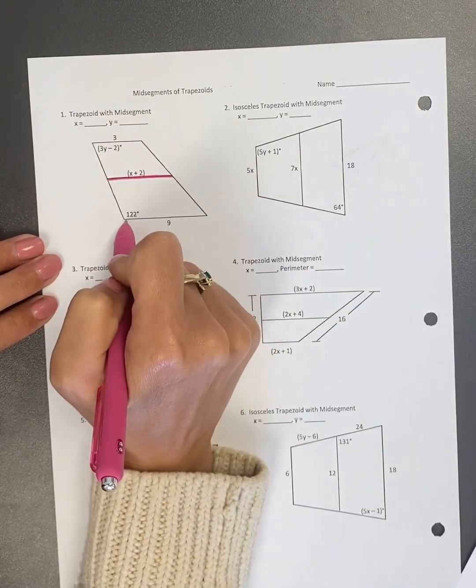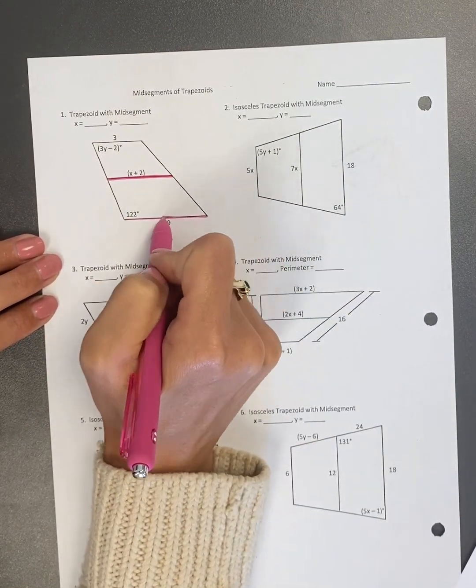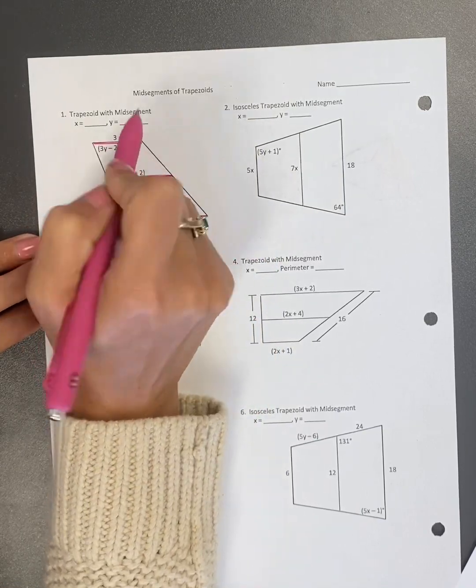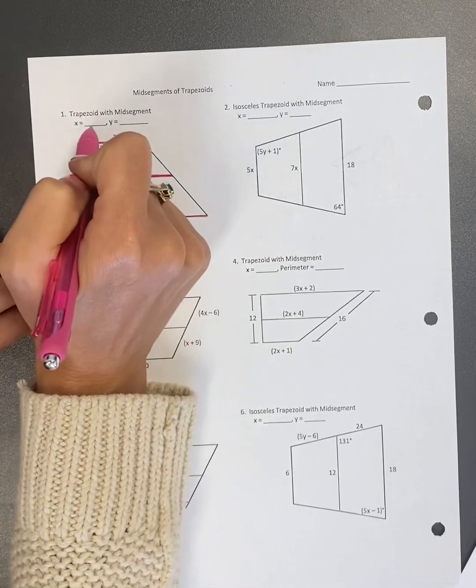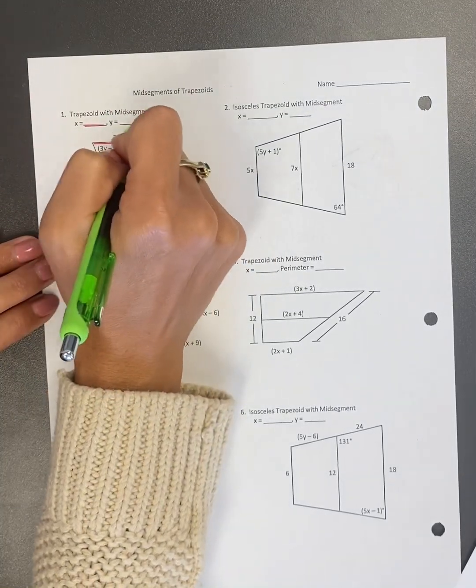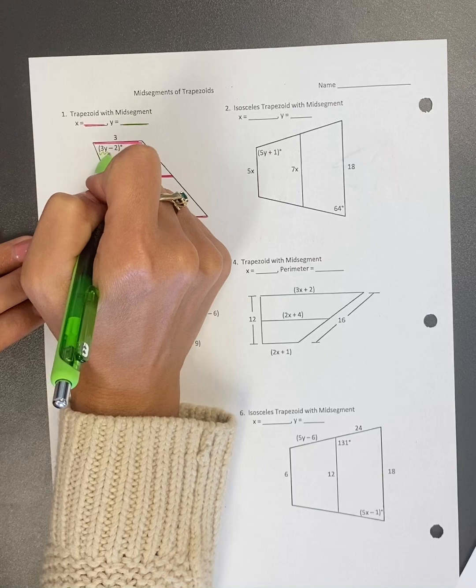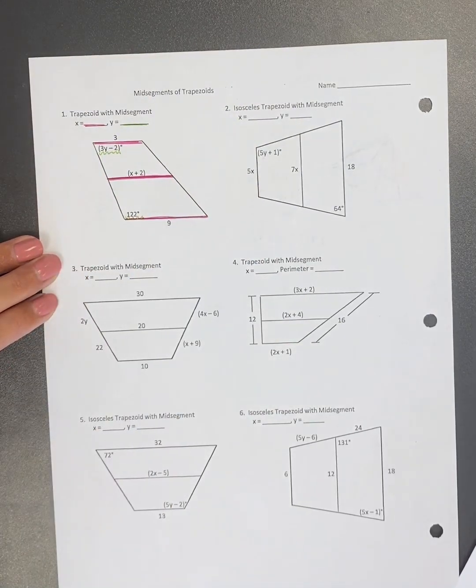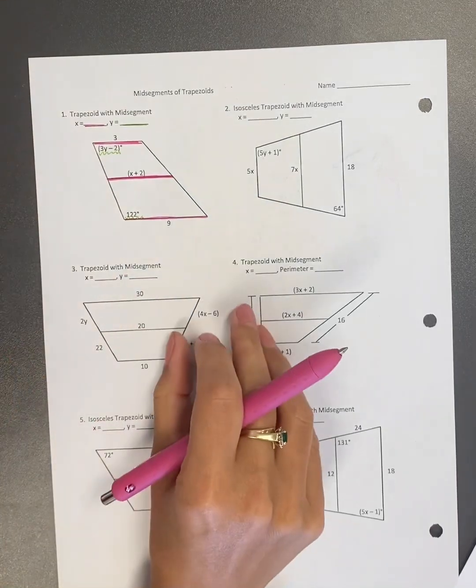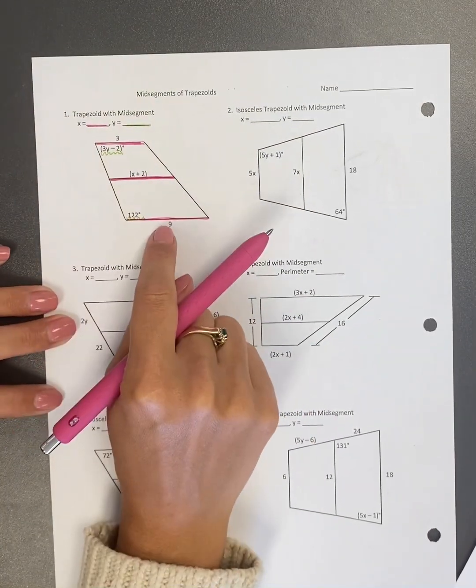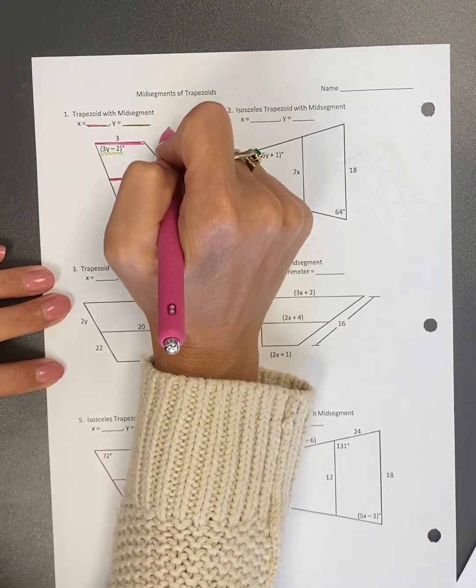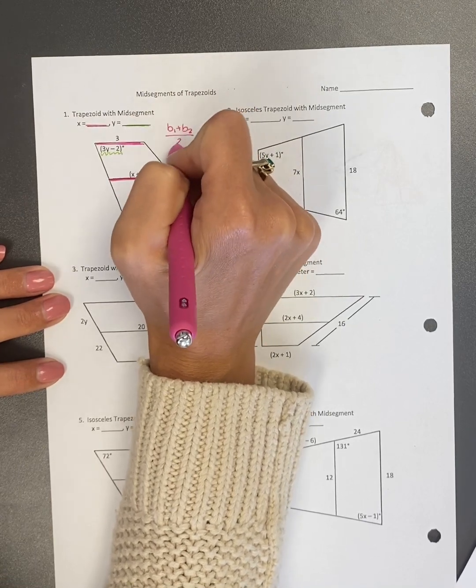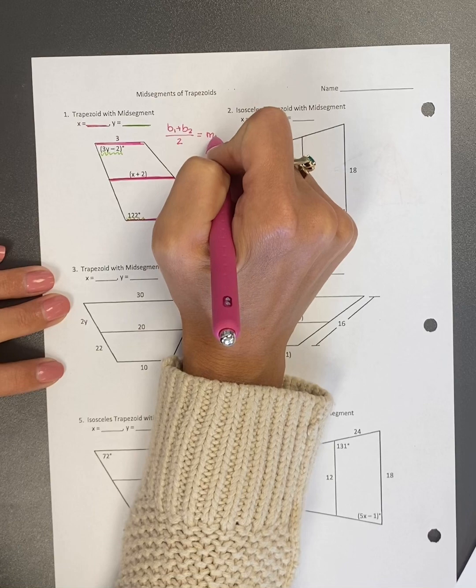So X plus two is representing the length. So I'm going to use all the lengths together to solve for the length. If you look at your Y's, your Y is technically an angle measure. So this part and this part go together. Angles go with angles and sides go with sides. So using my midsegment theorem...